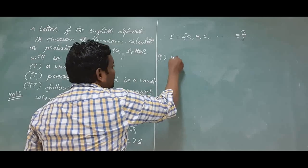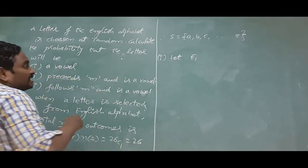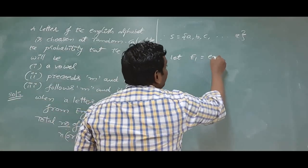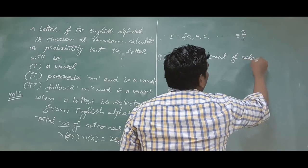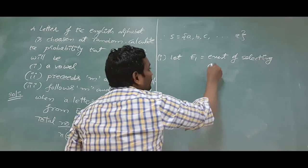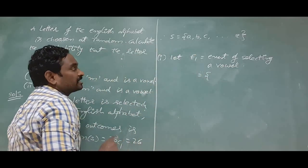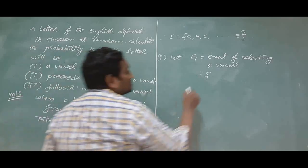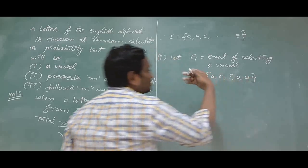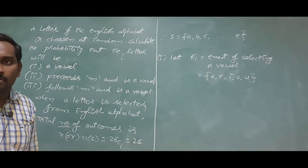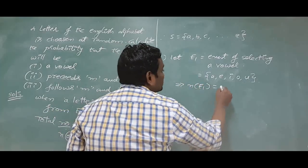First one, let E1, put the first event name as E1 is equal to event of selecting a vowel. Already you know what are the vowel letters in English alphabet. A, E, I, O, U. These all 5 letters are favorable to get a vowel. So N of E1 is nothing but number of favorable cases, it would be 5.